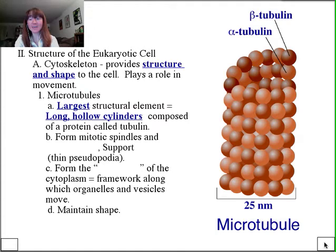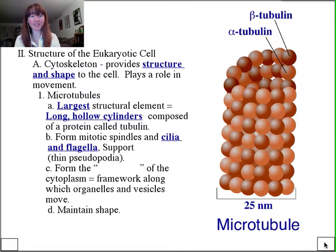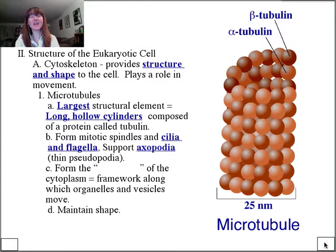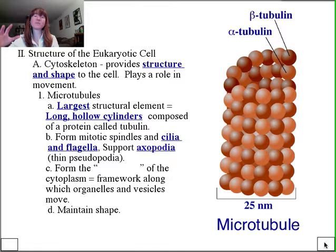Microtubules form mitotic spindles and form cilia and flagella, so they're very much involved in motion of the eukaryotic cell. We'll soon talk about the whip-like motion of a eukaryotic flagellum and the way microtubules come together in doublets to form the core of eukaryotic flagella. They also provide support and form structures called axopodia, which are kind of like pseudopodia but much longer, thinner, and more highly spiky.